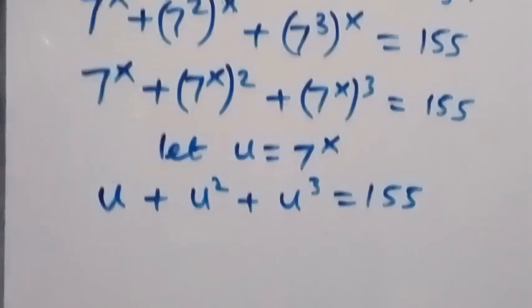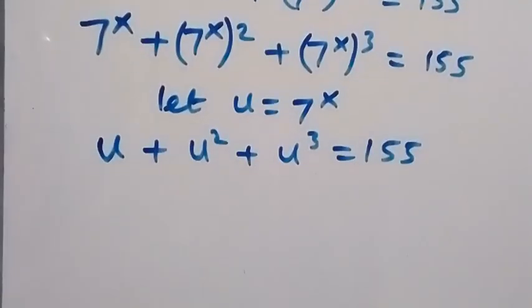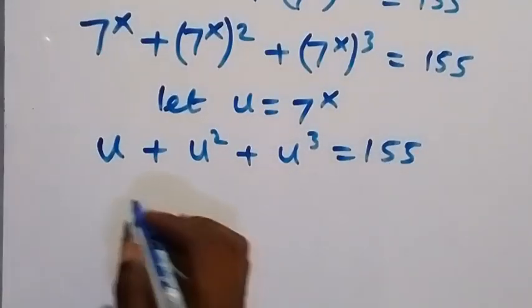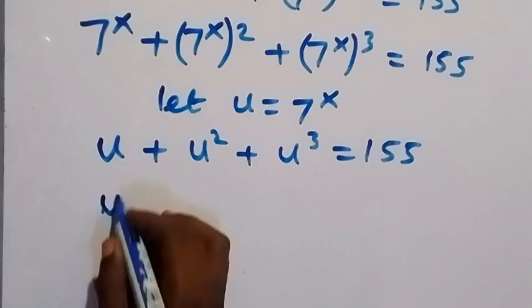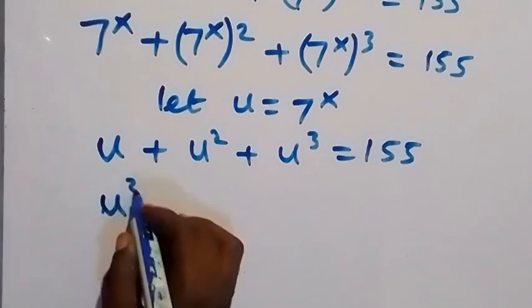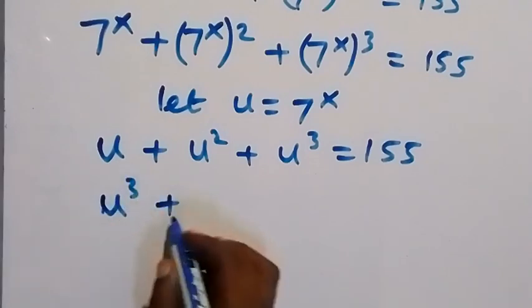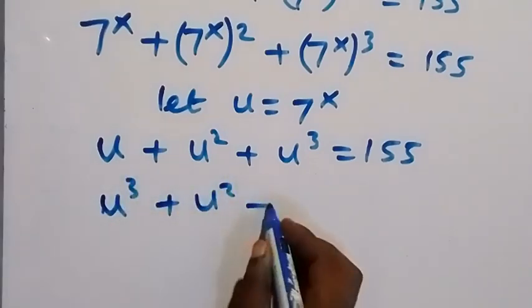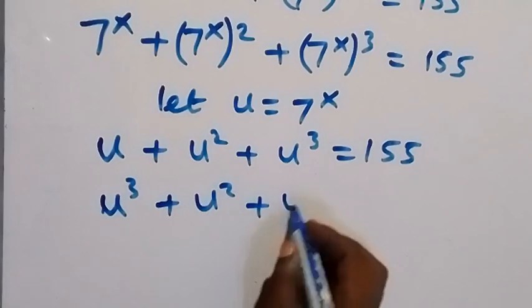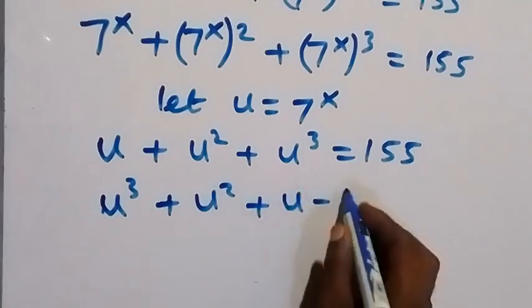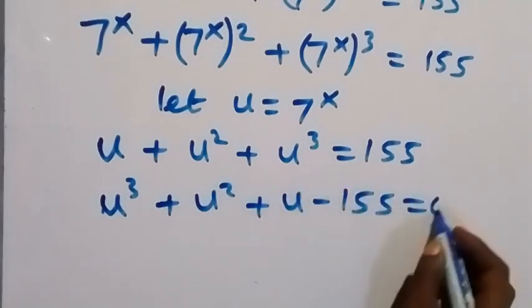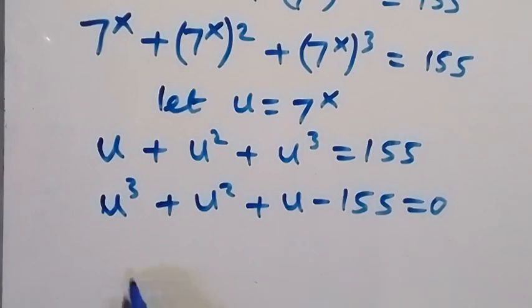Then we can rearrange and take 155 to this side. We have u cubed plus u squared, plus u, then minus 155, then equals to 0.